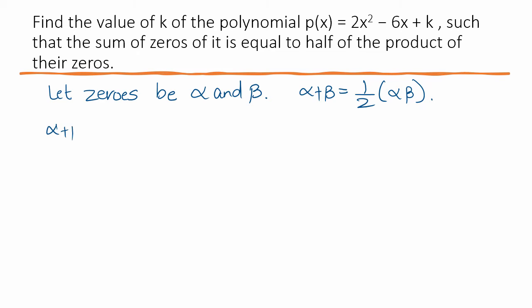We know that alpha plus beta is -b/a. Alpha beta, we know by definition, is c/a. So, we substitute here: -b/a, b is -6, so minus of -6, a is 2, which is 6/2 equals 3.